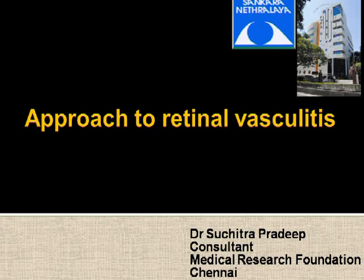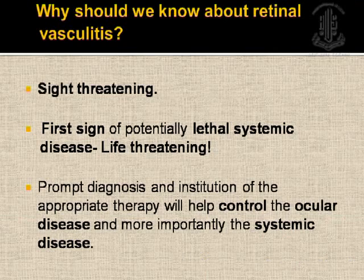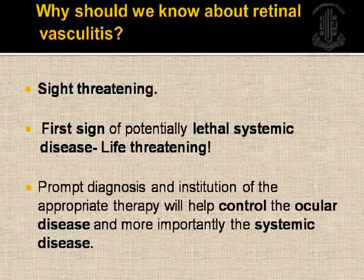Now we know how to approach anterior uveitis, intermediary uveitis, posterior uveitis, and of course scleritis. Now we will move on to how we approach a patient with pan-uveitis. Pan-uveitis has been classically defined by the International Uveitis Study Group in 1987 as generalized inflammation of all three parts of the uvea. In 2005, the Sun Working Group redefined it as a subset of uveitis where there is no predominant site of inflammation, but inflammation is observed in the anterior chamber, vitreous, and retina or choroid.